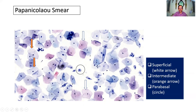The intermediate cell is slightly smaller compared to the superficial cell. Its nucleus is more vesicular or larger, and the cytoplasm is pale bluish — that is the classical picture of an intermediate cell. The parabasal cell, on the contrary, is the smallest cell, just above the basal cell. It has the largest nucleus. The orange arrow is the intermediate cell, the white arrow is the superficial cell, and the circle marks the parabasal cell.